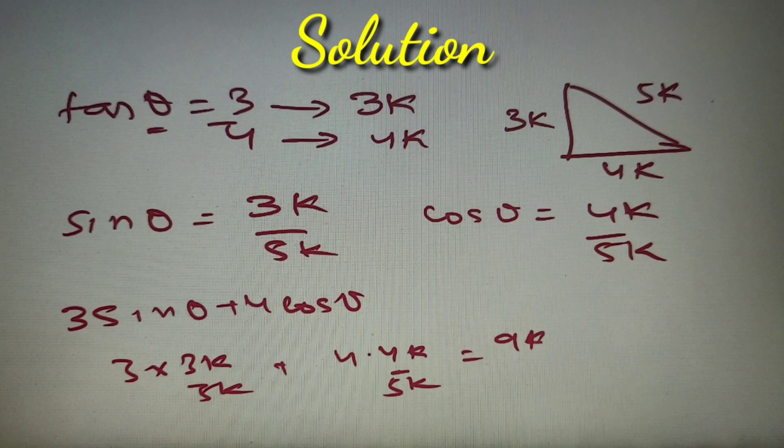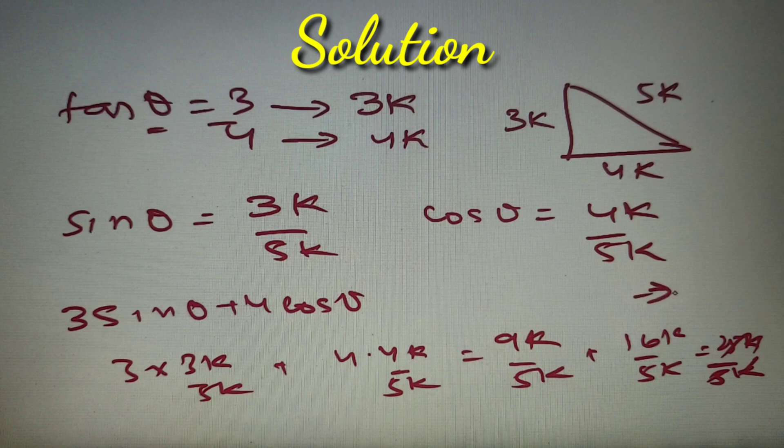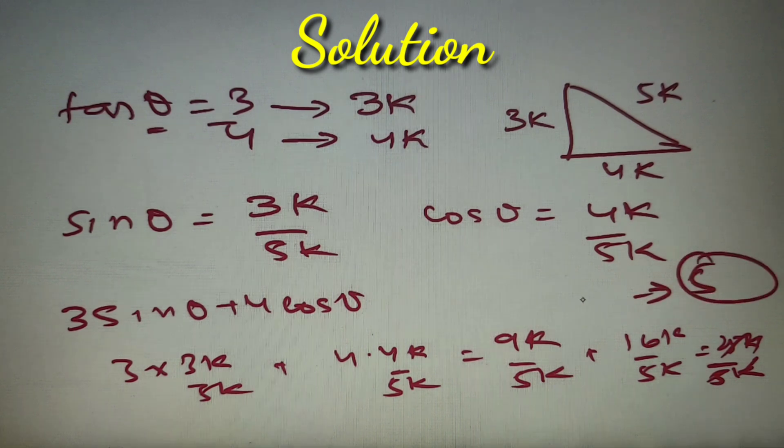Upon calculation this is equal to 9k by 5k plus 16k by 5k, which is equal to 25k by 5k, and k will cancel and 5 and 25 will get cancelled, and we'll get 5 as a result, which is option number B.